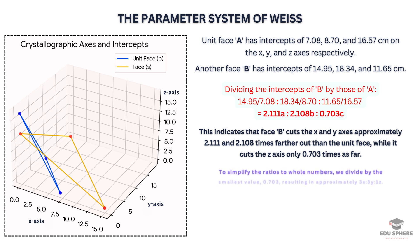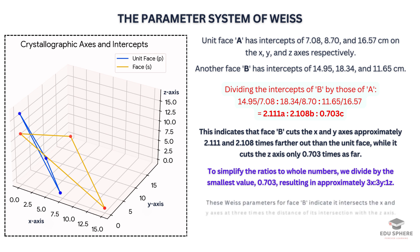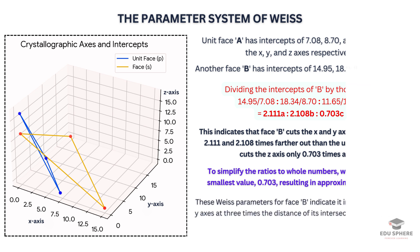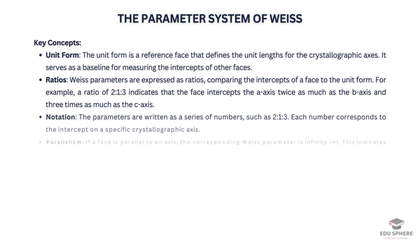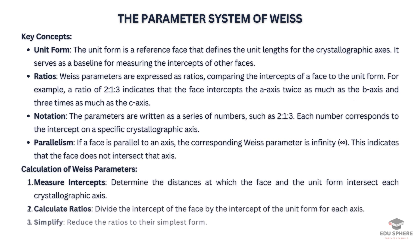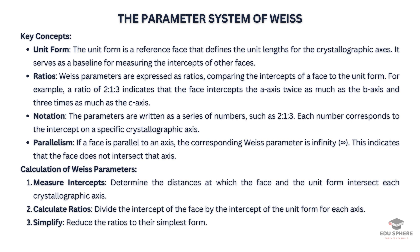To express these ratios in the simplest whole numbers, we divide all the numbers by the smallest one among them. In this case, dividing by 0.703 gives us approximately 3x, 3y, 1z. These are the Weiss parameters for face B. It is important to note that slight deviations from whole numbers in the Weiss parameters are often attributed to experimental errors in measuring the intercepts. However, the core concept remains the same.